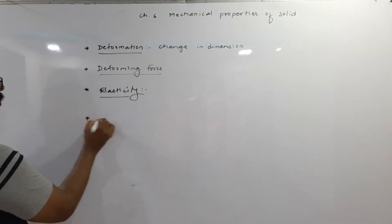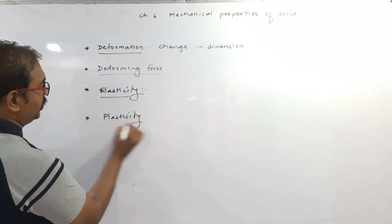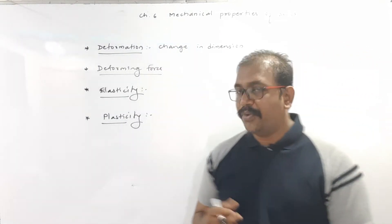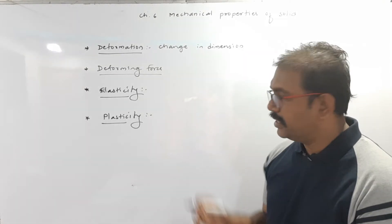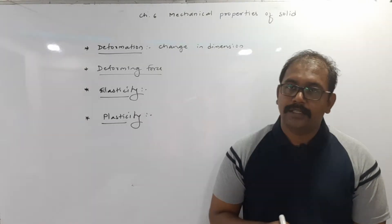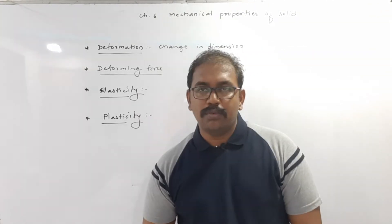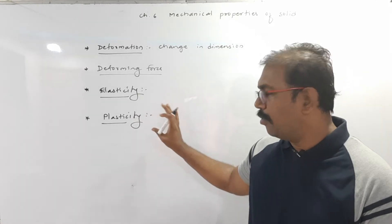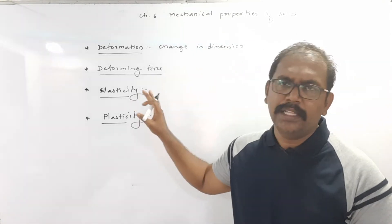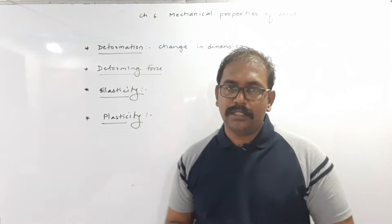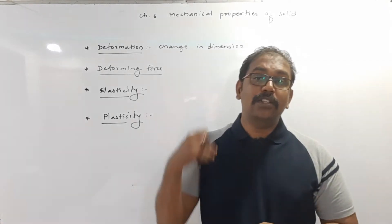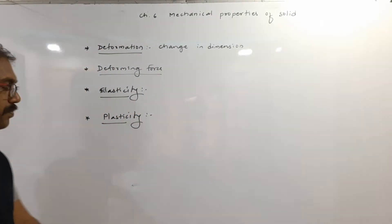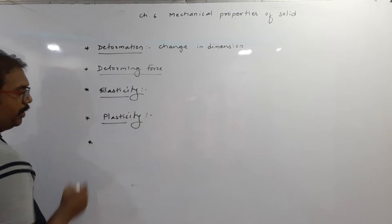Next is plasticity. Plastic bodies include clay, wax, and mud. For a simple example: if you apply force to wax, its size and shape change. Then as you remove the force, the size and shape remain as they are — the change is permanent. Plasticity is the property of a body due to which it does not regain its original size and shape after removing the deforming force. The body which follows this property is called a plastic body.